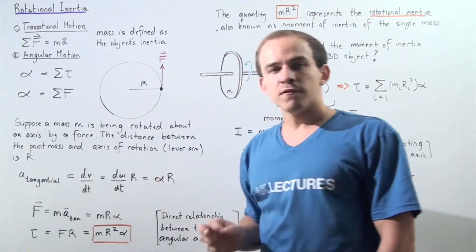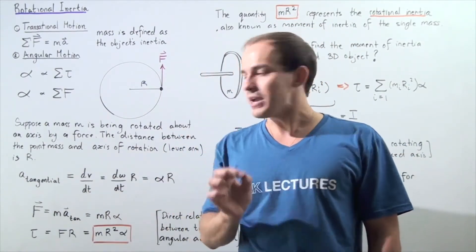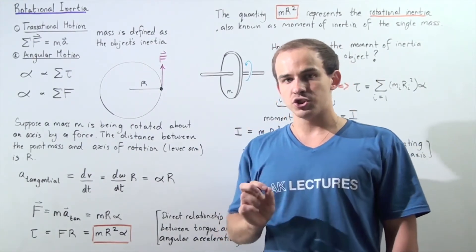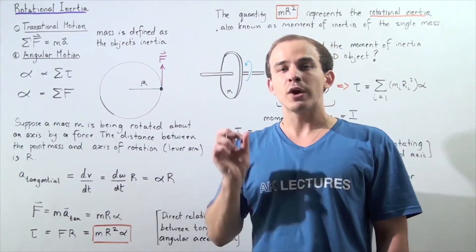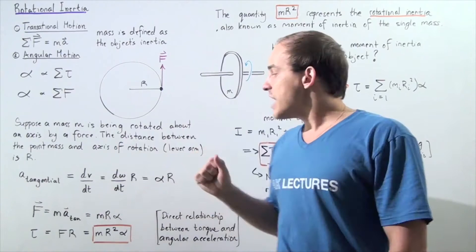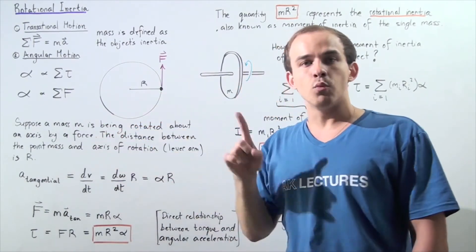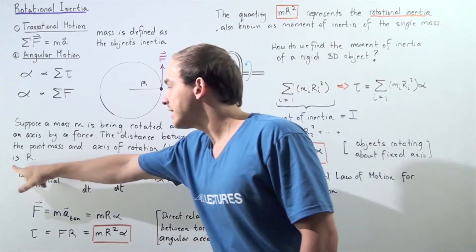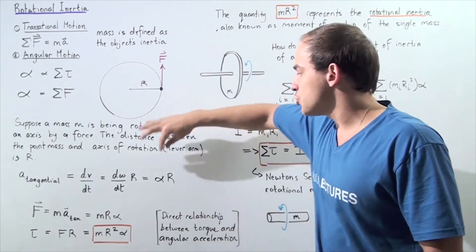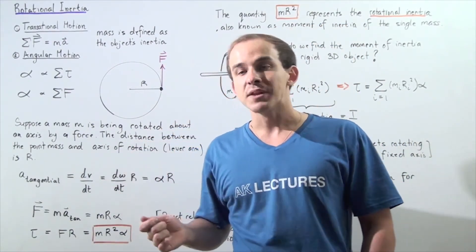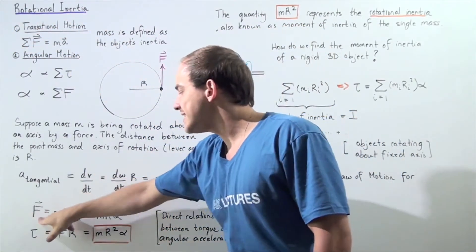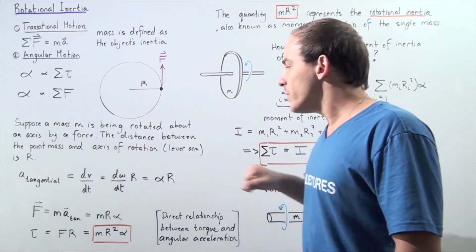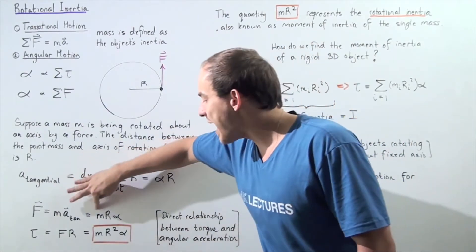Recall the formula for tangential acceleration: tangential linear acceleration equals the derivative of the velocity function with respect to time. Recall that velocity equals angular velocity multiplied by the radius of the circle — in this case, the lever arm R. Taking the derivative of angular velocity with respect to time gives the instantaneous angular acceleration. So tangential acceleration equals angular acceleration multiplied by the lever arm: a_t = α · R.